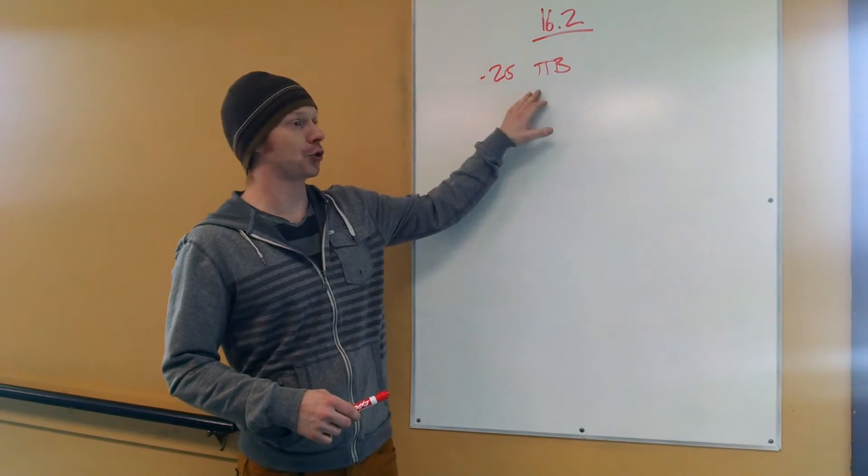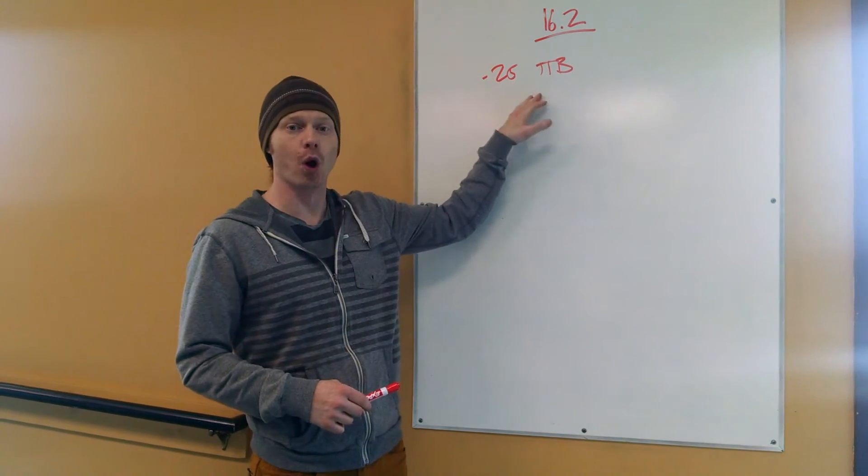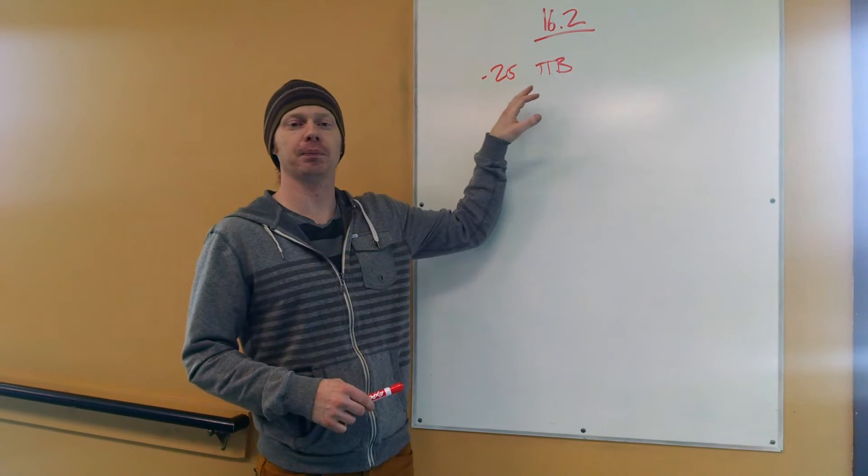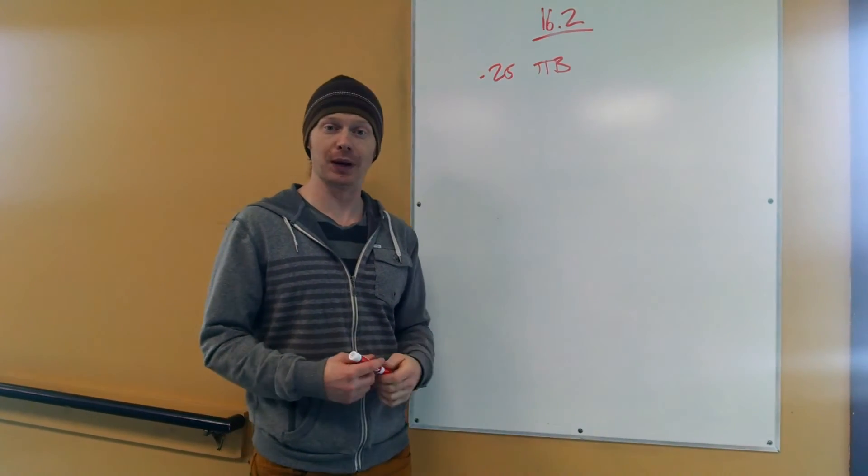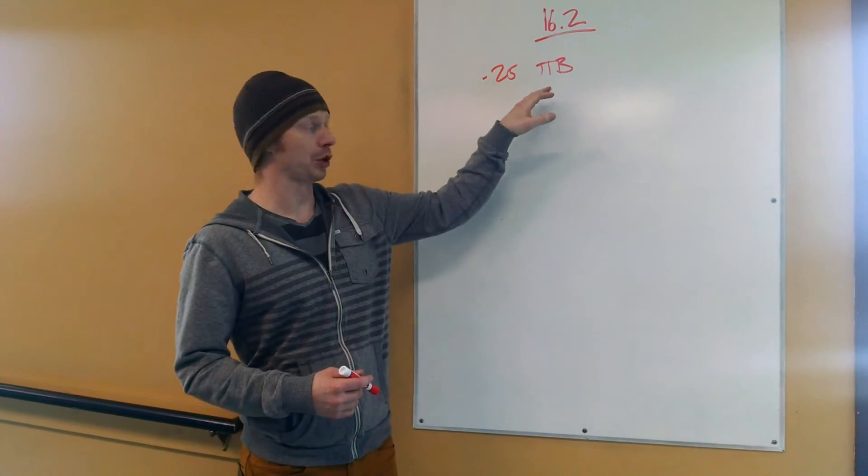25 toes to bar, small sets, short rests. That might even be sets of one, but you really want to try to come away from the toes to bar feeling pretty good, especially in these first couple rounds. This should not be where you're really struggling.